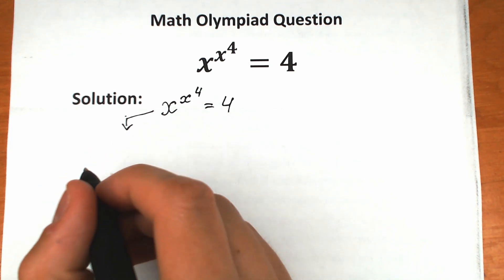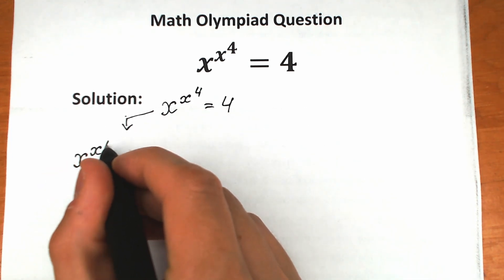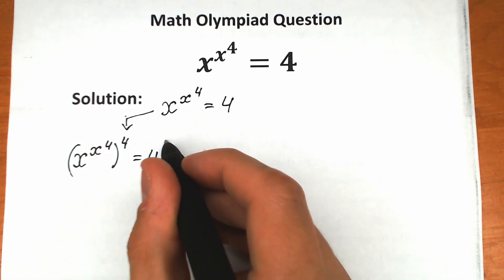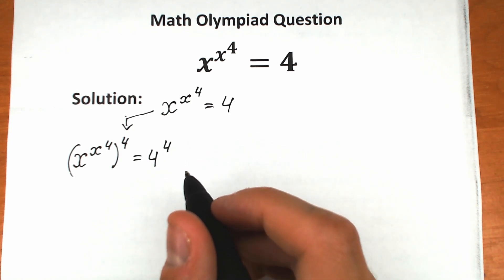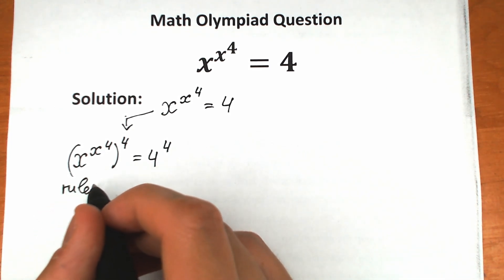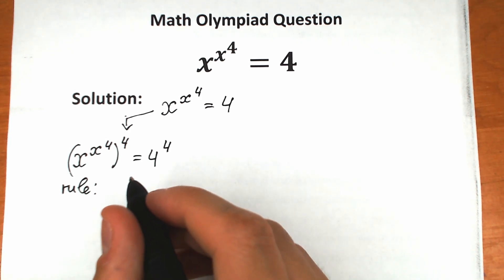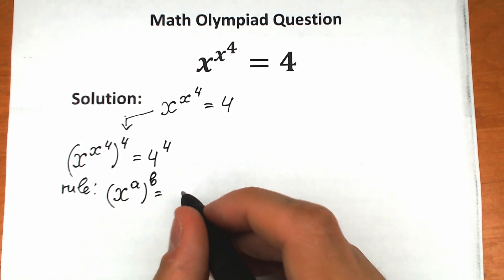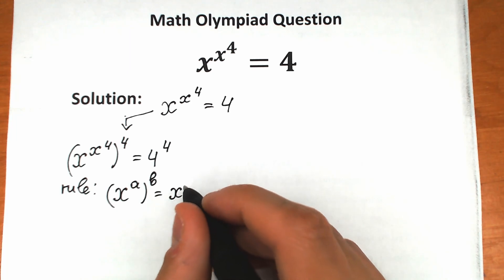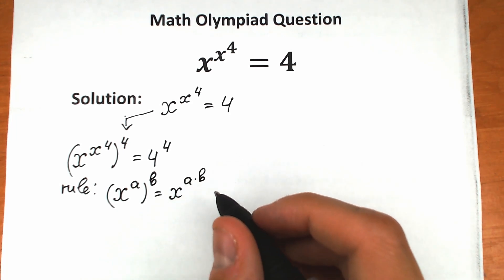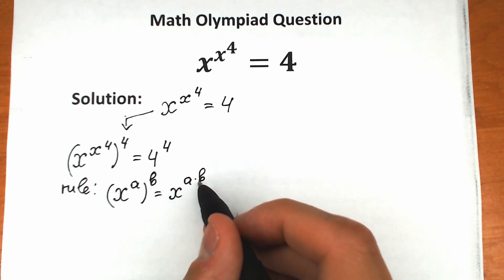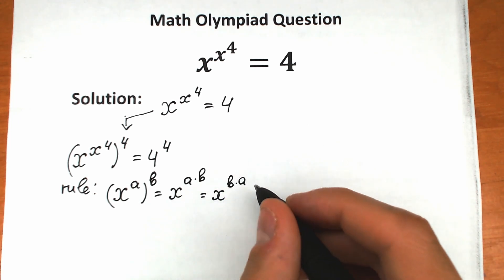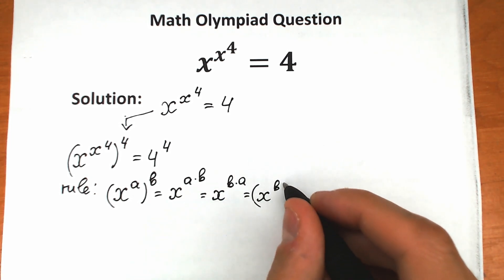So we have x to the power x to the power 4 on the left-hand side, raised to the power 4, and 4 to the power 4 on the right-hand side. Right now you should know a really great rule. If we have x to the power a, raised to the power b, everyone knows we should multiply a times b, giving x to the power a times b. We can change the position: x to the power a times b equals x to the power b, raised to the power a.